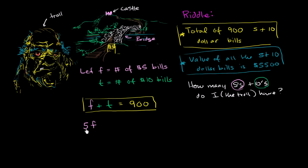So if I have one $5 bill, it will be $5. If I have 100 $5 bills, then it's going to be $500. However many $5 bills, I just multiply it by 5. That's the value of the $5 bills. Let me write that down. Value of the $5 bills.